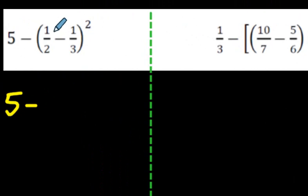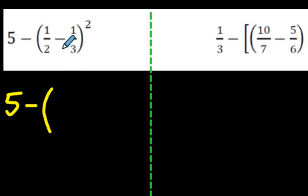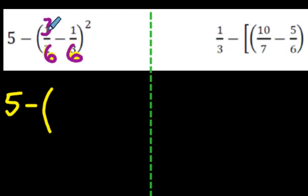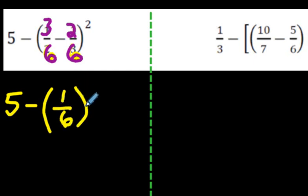5 minus what's inside the brackets — they're throwing fractions at us here. To do this question, you need a common denominator — watch a video I've previously posted on how to subtract fractions if needed. Our common denominator is going to be 6. 2 times 3 is 6, so multiply the top by 3. And 3 times 2 makes 6, so multiply the top by 2. So it's like saying 3 minus 2 over 6 — 3 minus 2 is 1 over 6. And that is squared.